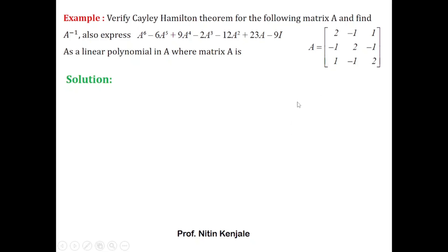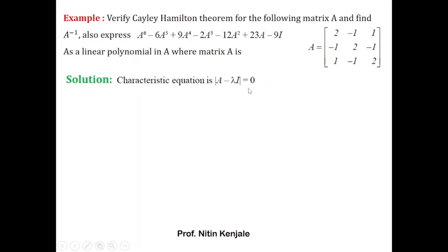To verify the Cayley-Hamilton theorem we have to find the characteristic equation of this matrix. The characteristic equation is given by det(A − λI) = 0. You can substitute for A and I and solve, or you can refer to one of my videos where I show a trick to find the characteristic equation of a 3×3 matrix — the link is in the description box. Using that trick, the characteristic equation is λ³ − 6λ² + 9λ − 4 = 0.